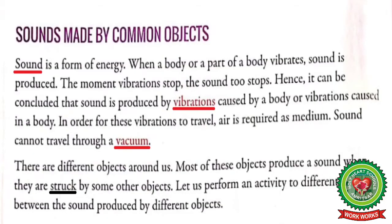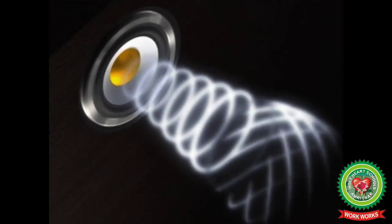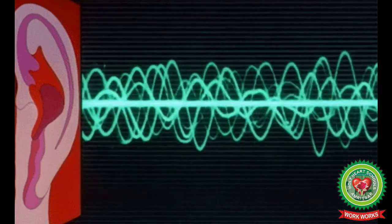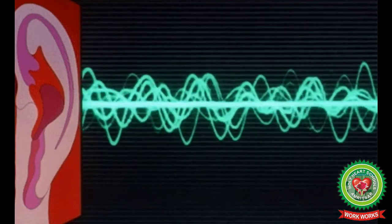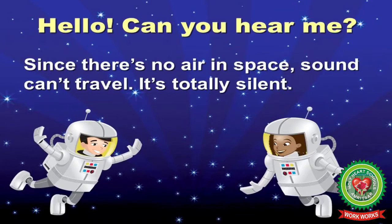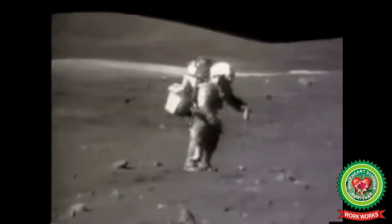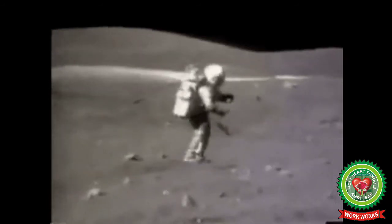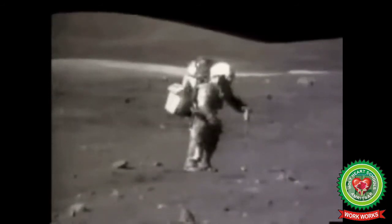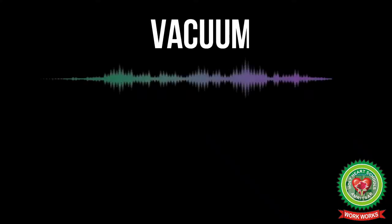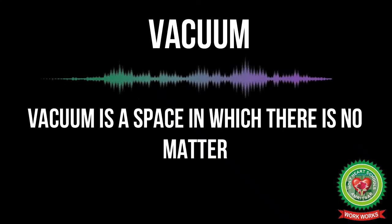Sound requires a medium to travel, and air is the medium through which sound travels, allowing us to hear different sounds in daily life. Sound cannot be heard on the moon, as it has no air for vibrations to travel. What is vacuum? Vacuum is a space in which there is no matter.